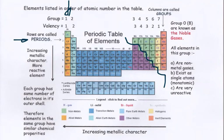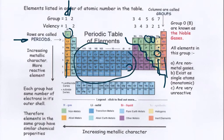There are seven diatomic elements: hydrogen, nitrogen, oxygen, fluorine, chlorine, bromine, and iodine. There are two liquids in the periodic table: bromine and mercury. The main groups that you need to know are the alkali metals, the halogens, the noble gases, and in the centre the transition metals.